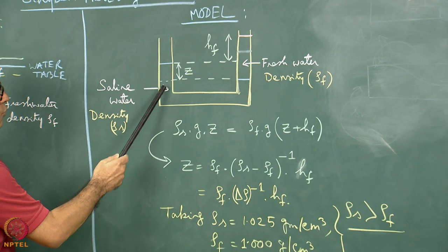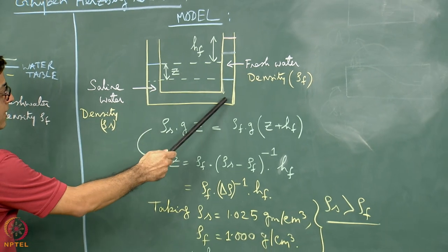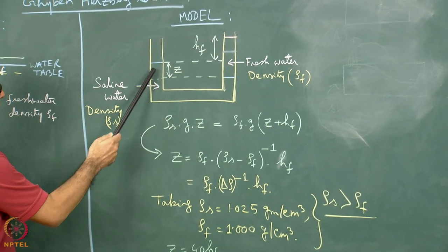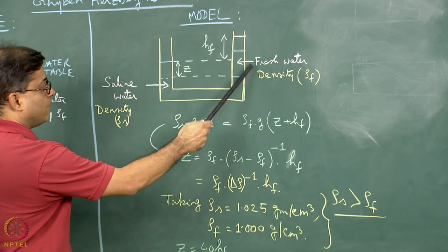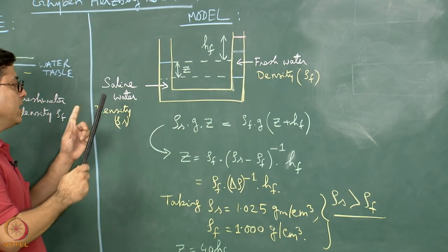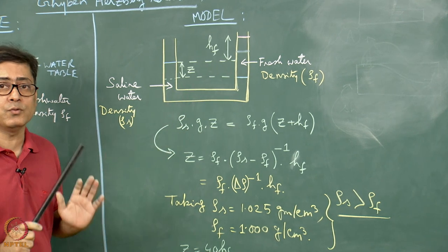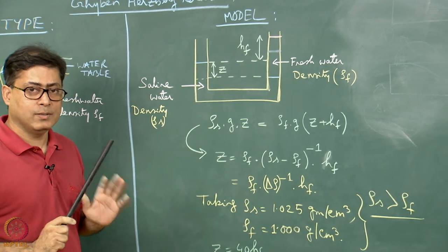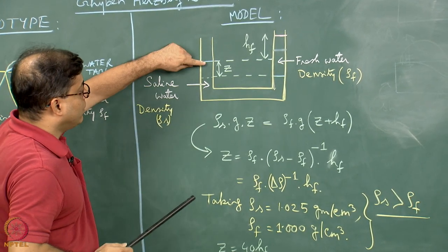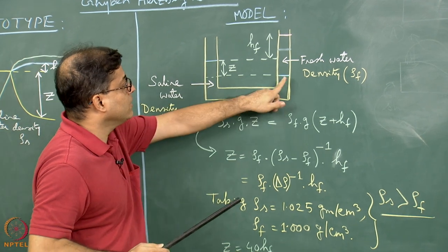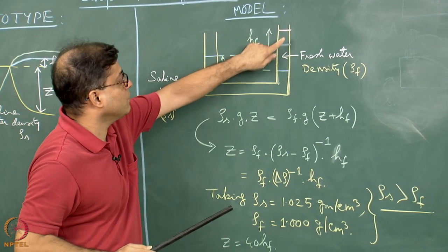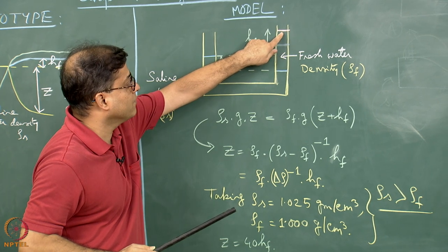Imagine there are two tubes connected at the bottom: on one side I have put saline water and on the other side fresh water. For the time being, think that saline water and fresh water do not mix together. This saline water, being denser, is pushing the fresh water upward. The top level of fresh water is shown by the colored line, and the level of saline water is here.